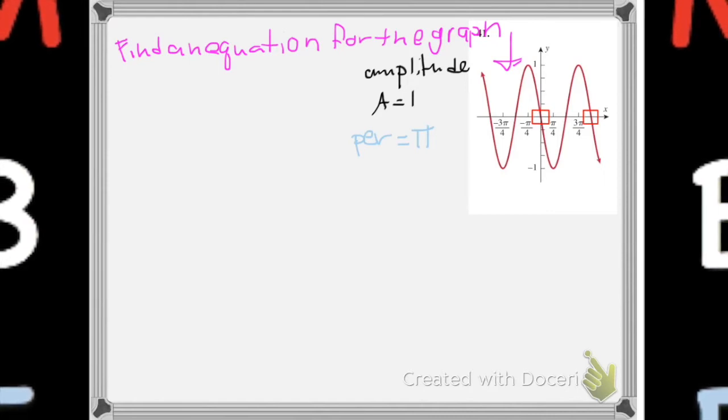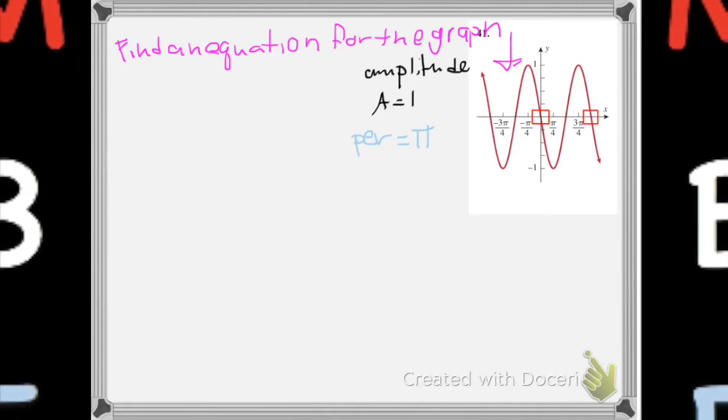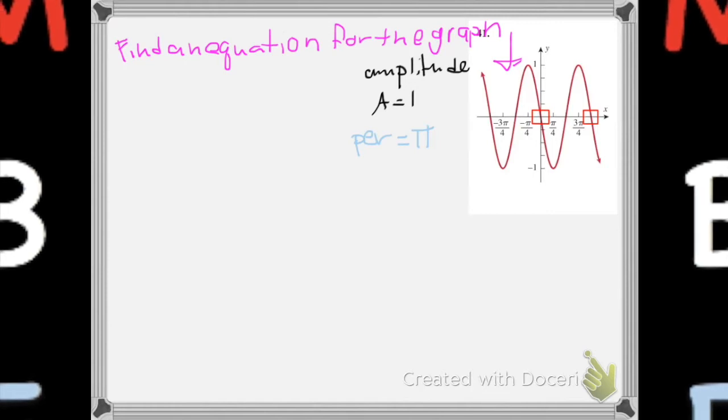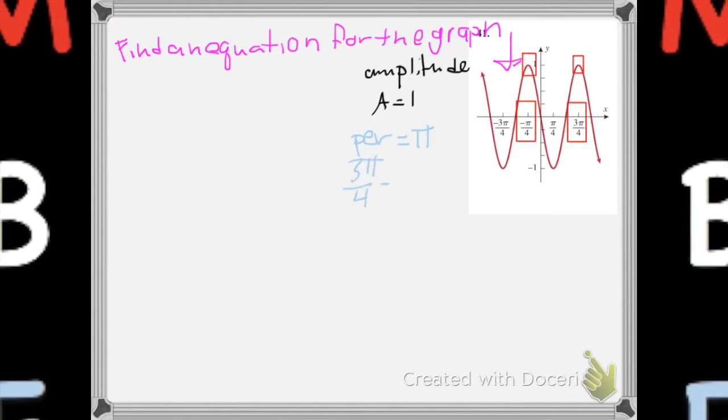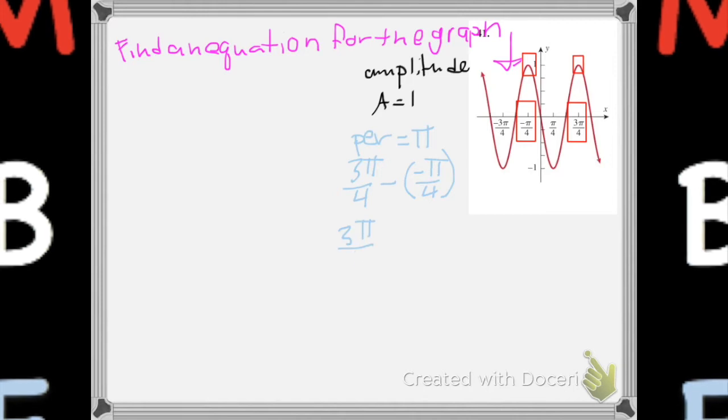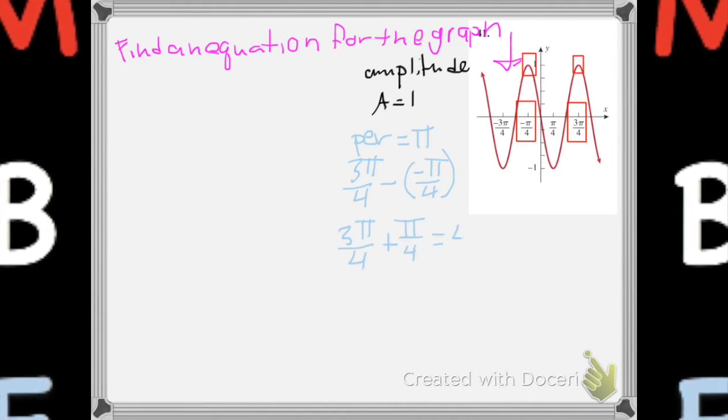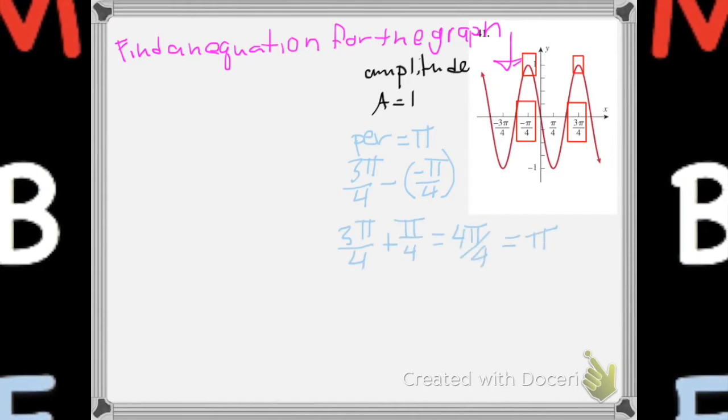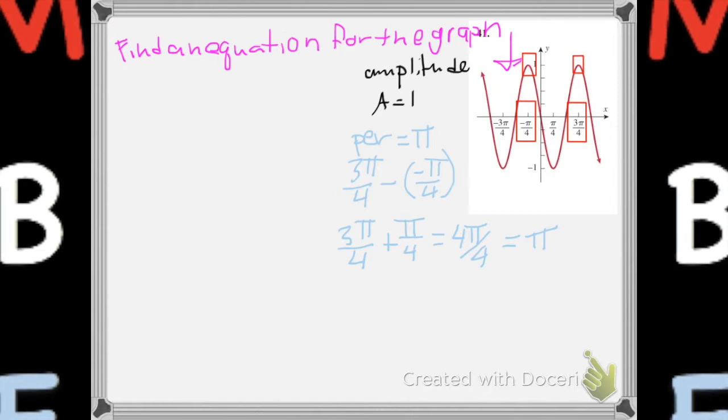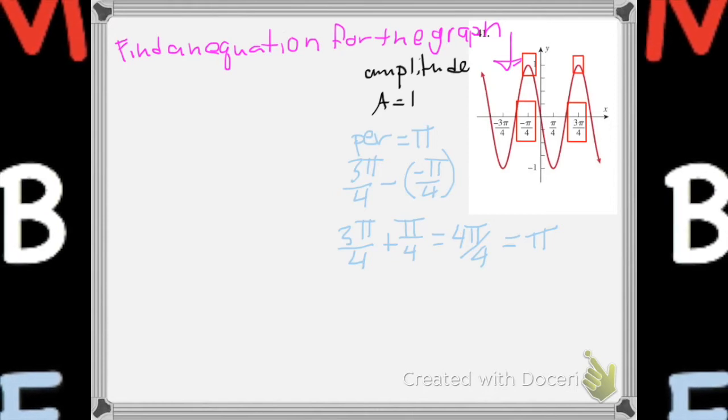But we don't have to check there. We can check it at its high points too, and that's what's going on here. That's the high point happens at 3π over 4 and minus 3π over 4. So if we subtract the two, we see that our period's π.